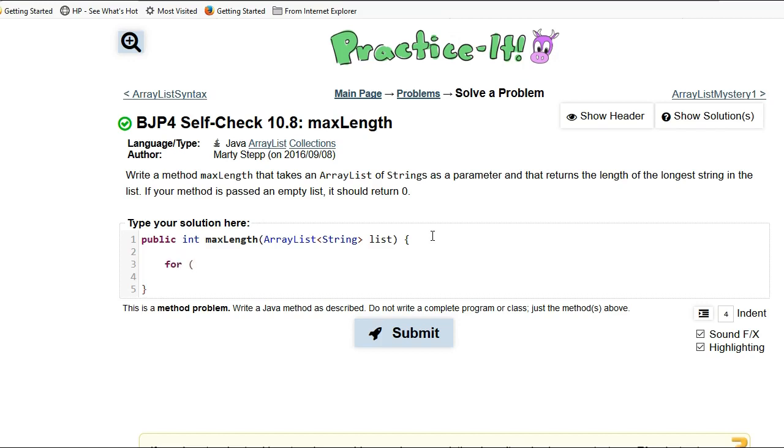So I'm going to write the first way, which is using a regular for loop. So for int index equals zero, while the index is less than the list dot size, and then index plus plus.